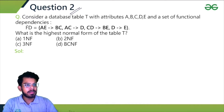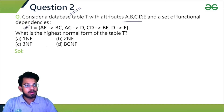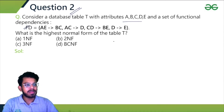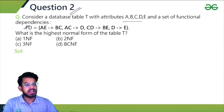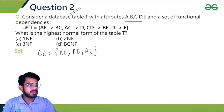Now we'll see the next example. Question 2: consider a database table T with attributes A to E, and a given set of functional dependencies. We have to find the highest normal form of the table T. Let's find the candidate keys first. The candidate keys of this relation will be AC, AD, and AE.